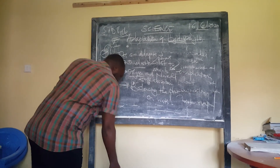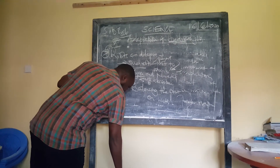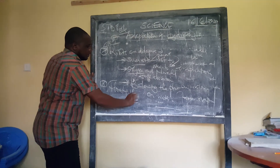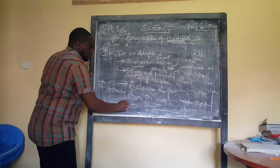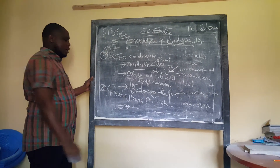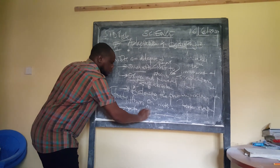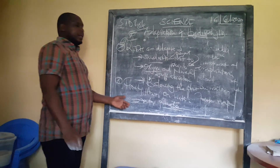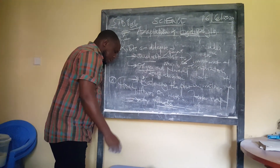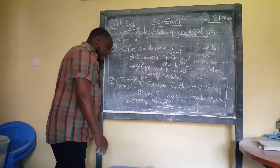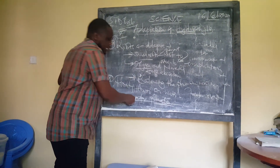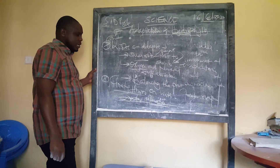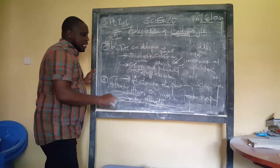Number eight: hydrophytes have floating flowers. The flowers of hydrophytes float on water for pollination, which is mainly done by insects — though it can also be done by water. The flowers float so that they are available and visible for pollination by small insects.